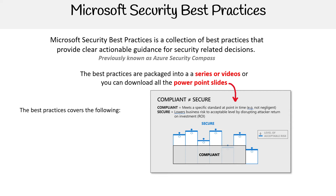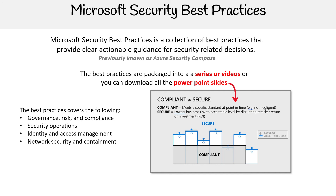The best practices cover the following areas: governance, risk, and compliance; security operations; identity and access management; network security and containment; information protection and storage; and application services. This is about 150 slides in total.